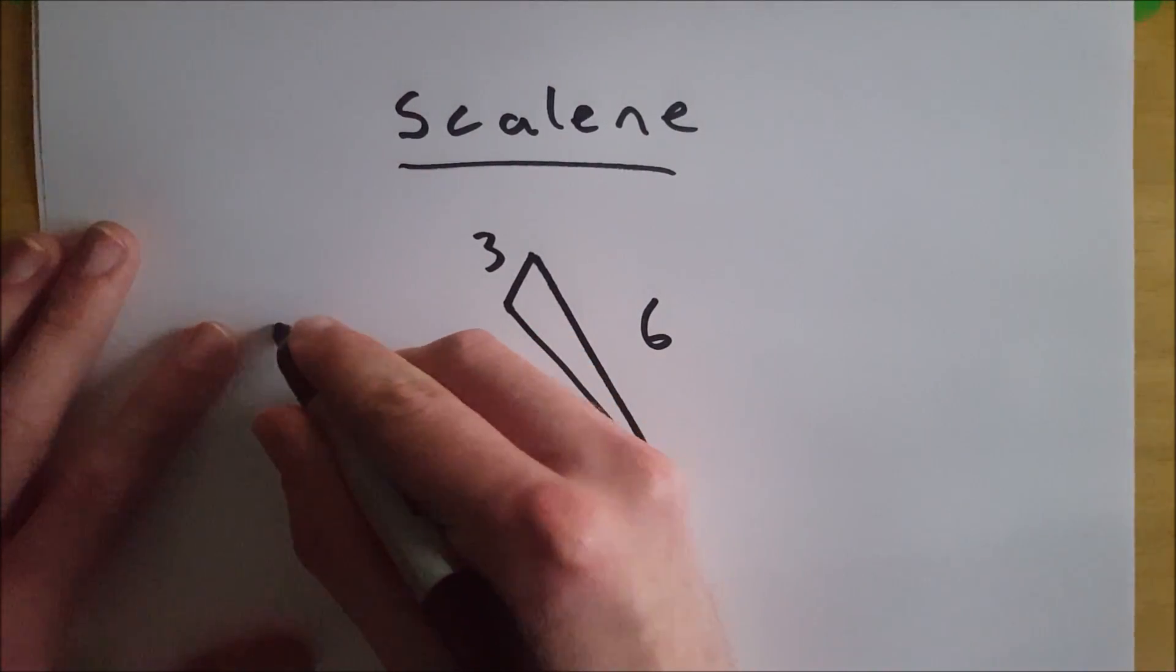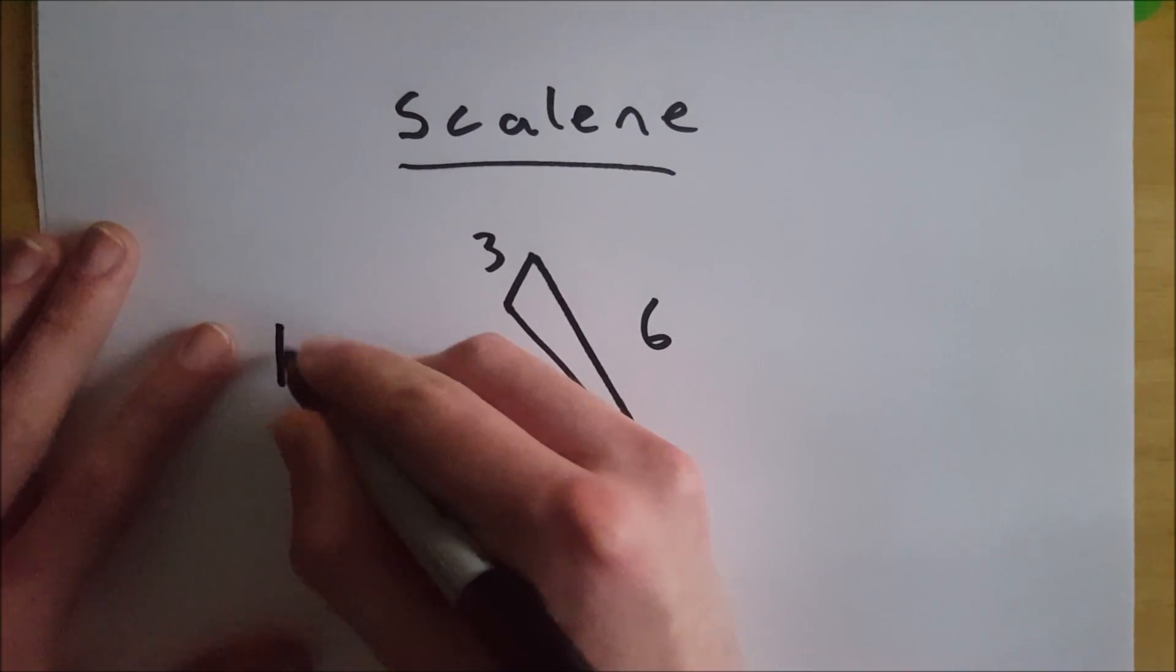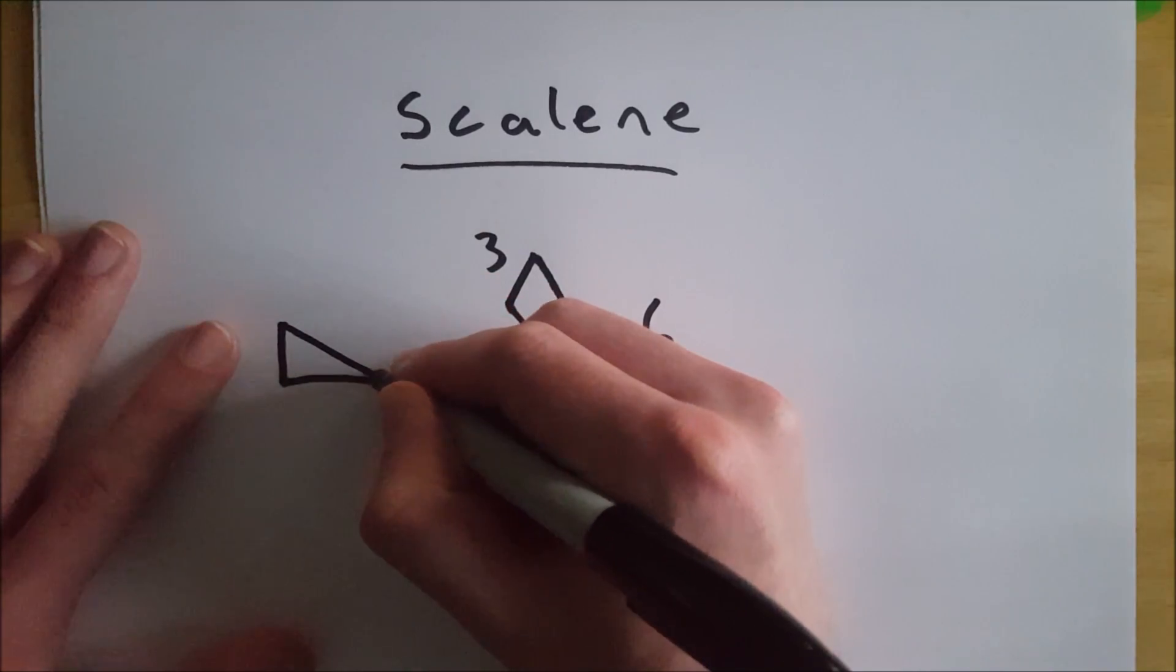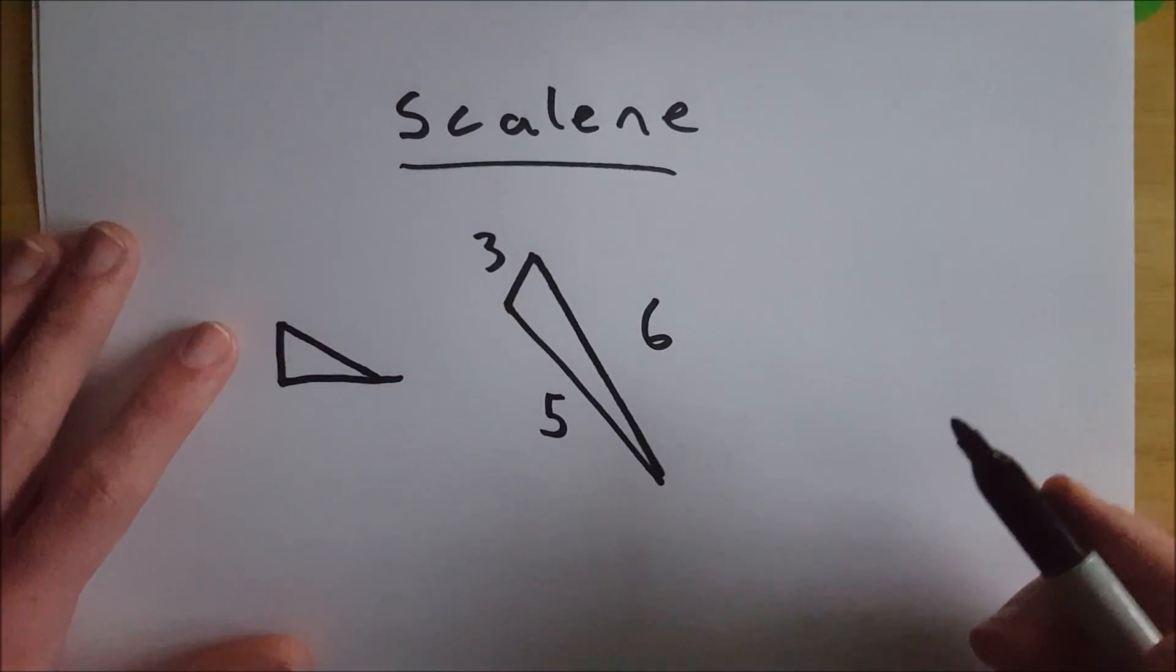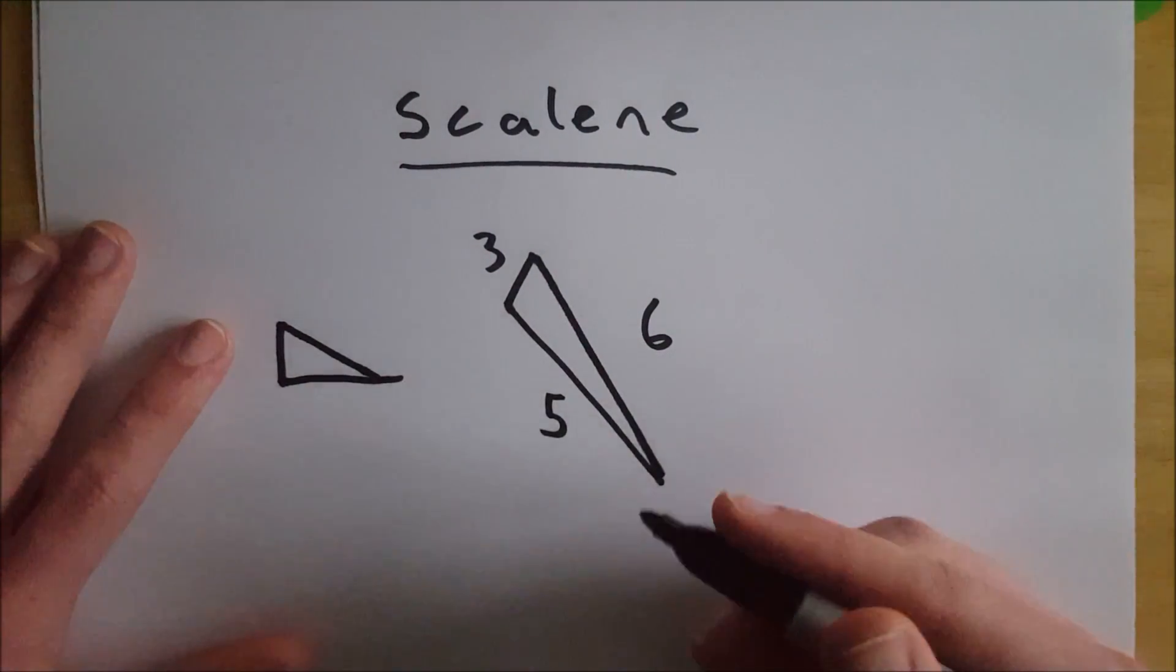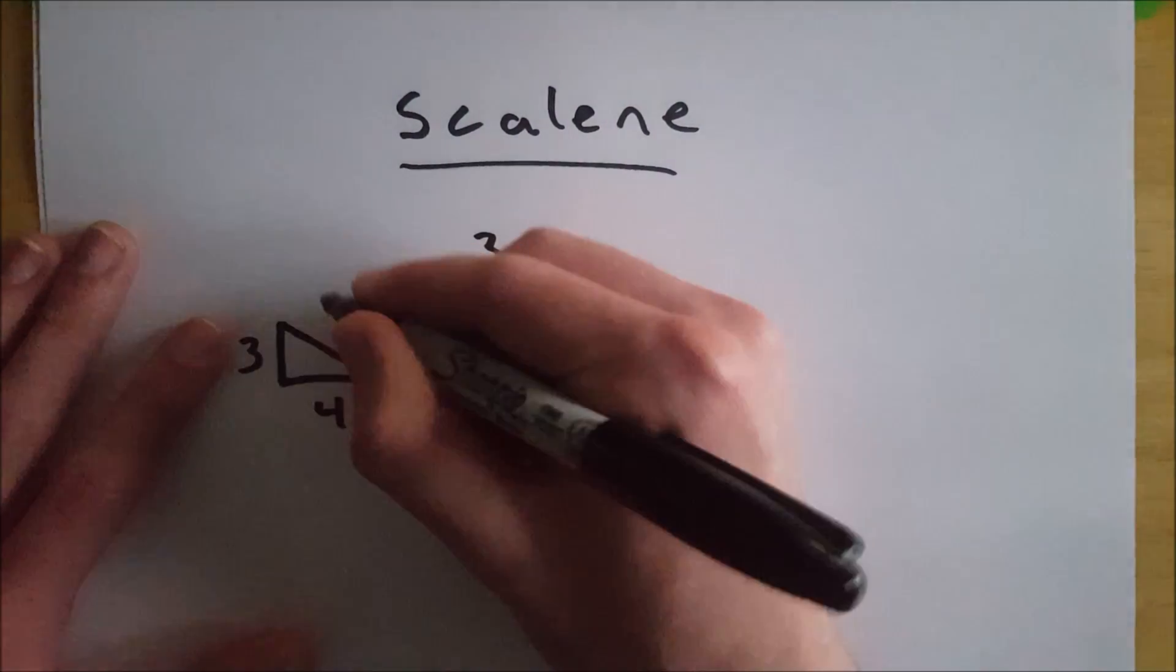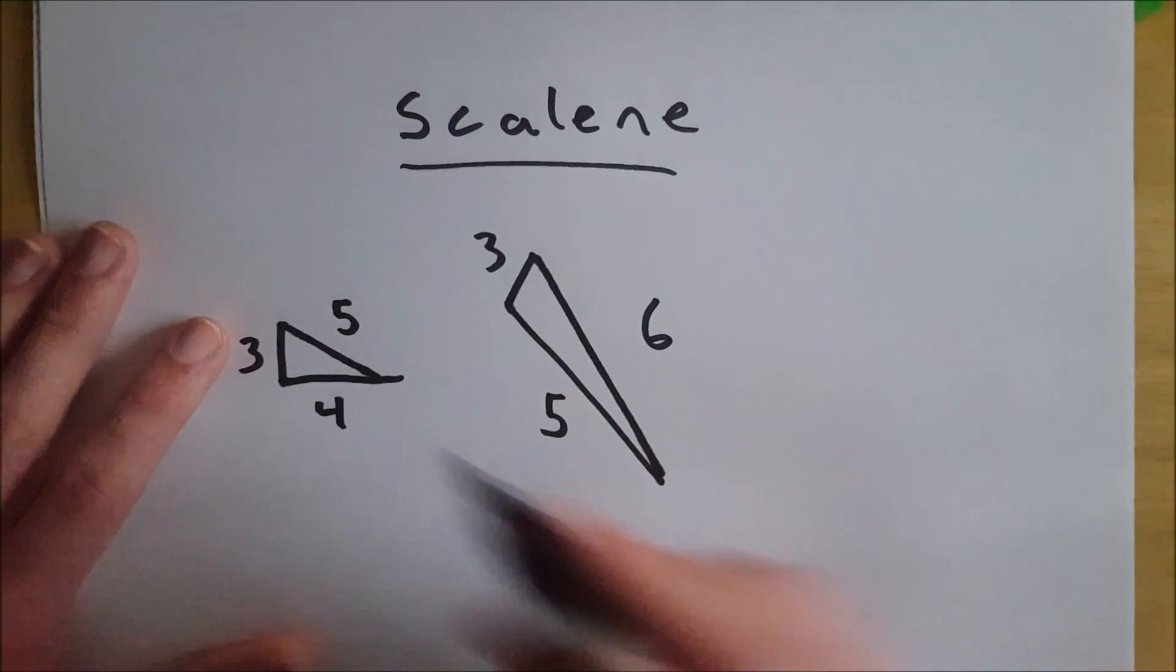Or it could look like this. Say something like that. Whoops, I drew that a little too long. But this could also be a scalene triangle. Say this was 3, 4, 5, a Pythagorean triple. Scalene triangle.